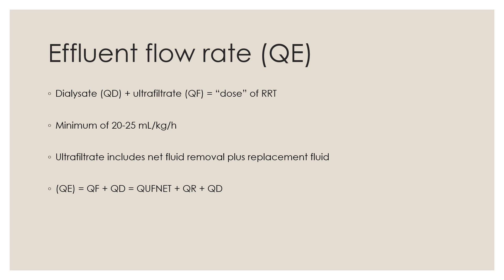The effluent flow rate is not set directly on the machine; rather, we target a specified effluent level. The effluent flow rate of at least 20 to 25 ml per kg per hour is also known as the dose of CRRT. However, patients with severe metabolic derangements such as hyperkalemia, severe acidemia, or hyperammonemia may require periods of higher CRRT dosing. The effluent is the composition of dialysate fluid per hour plus total ultrafiltrate per hour, which is a combination of net ultrafiltration rate per hour and replacement fluid per hour.